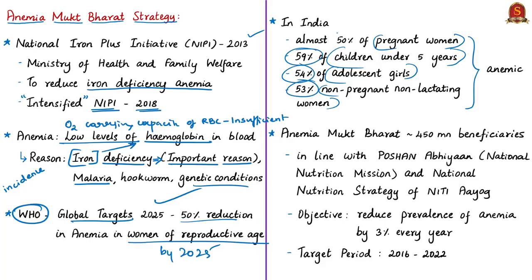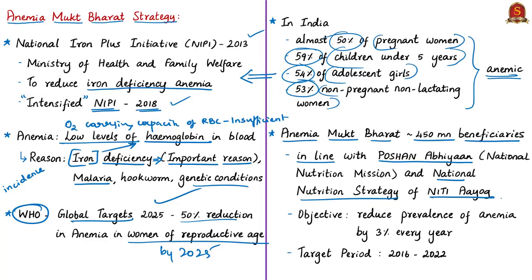To address iron deficiency anemia, the government initiated the National Iron Plus Initiative in 2013, reconstituted as Intensified National Iron Plus Initiative in 2018. Under this initiative, the Anemia Mukt Bharat Strategy aims to reach out to 450 million beneficiaries. The objective of reducing anemia is in line with the Poshan Abhyan and National Nutrition Strategy of NITI Aayog.